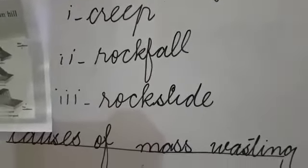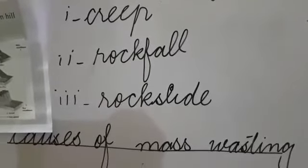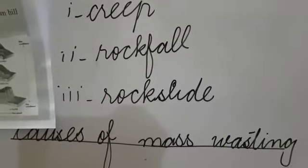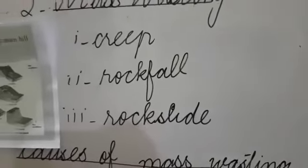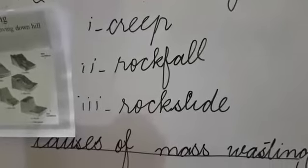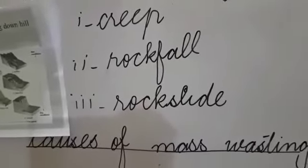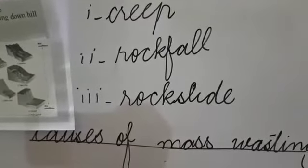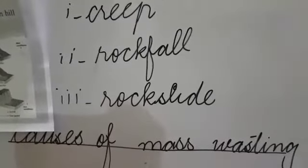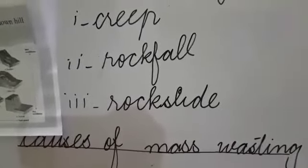Next is Rock Slide. It is a rapid downward flow of bedrock material on a slope. When a rock is quickly moved downward from a slope, it is called the Rock Slide. The best example of it is Land Sliding.